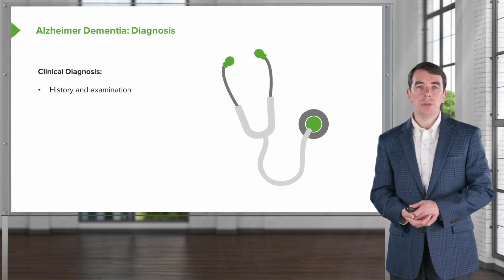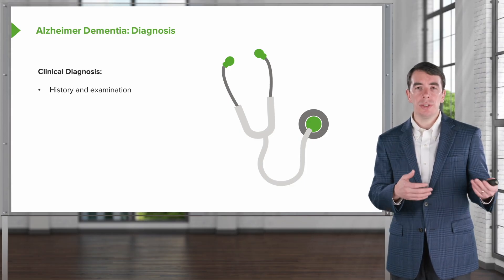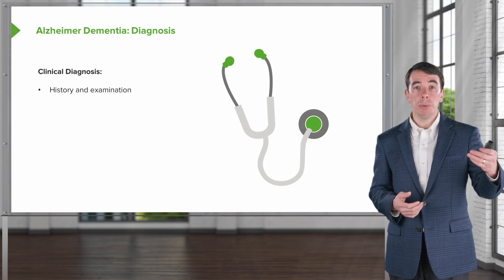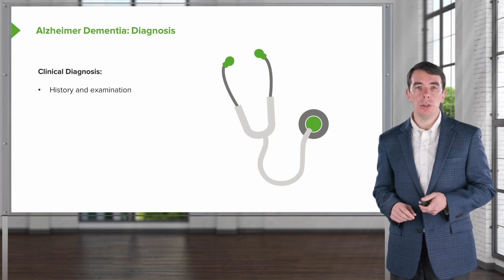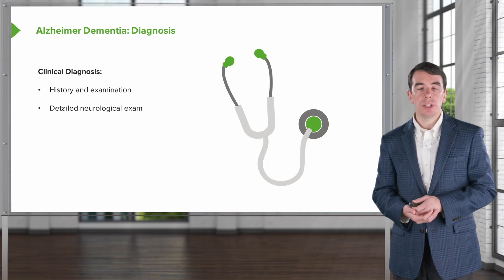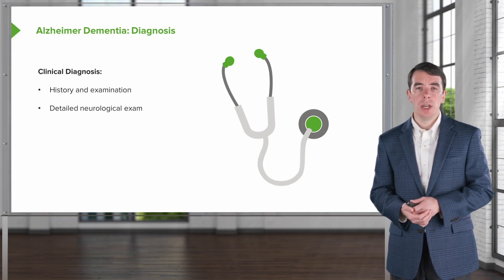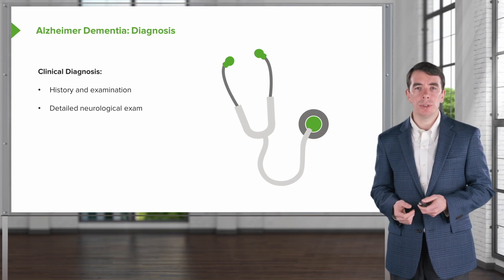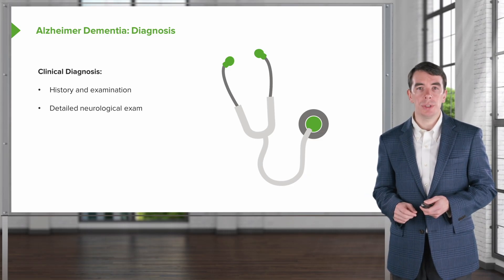How do we diagnose Alzheimer's disease? It's a clinical diagnosis. We use our history and physical examination to support a diagnosis of Alzheimer's disease and to exclude alternative pathology. A detailed neurologic exam is important. Patients with focal neurologic deficits or symptoms and signs that don't fit with typical Alzheimer's disease pathology should warrant evaluation of an alternative diagnosis.